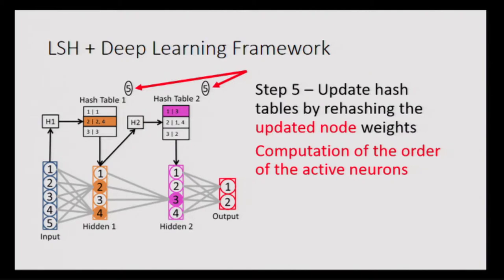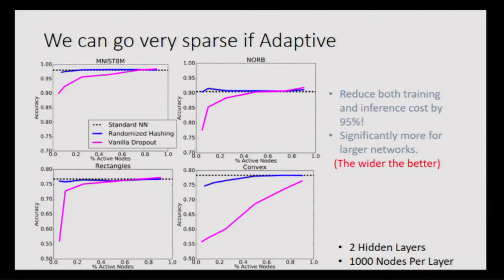The amount of computation is of the order of active neurons rather than the total number of neurons. When you update the weights you also update the hash table, reorganizing neurons as training progresses. Every operation is only of the order of active neurons. We see in practice — across four different datasets — the pink line is dropout, the blue line is sampling using this procedure, and the bold black line is the actual neural network with full computation. You can make the network very sparse, most of the time utilizing only 5 percent of active neurons, and computation scales truly with the number of active neurons.